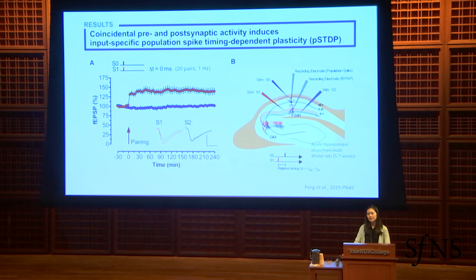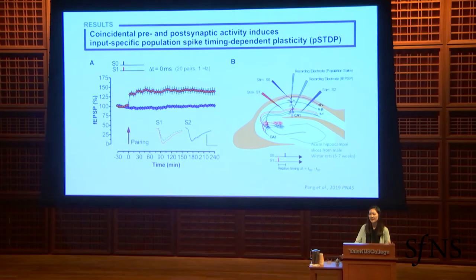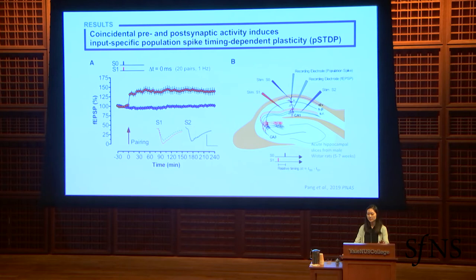I took slices from the rat hippocampus and recorded from the synapses between the CA3 and CA1 neurons. On each slice I had three stimulating electrodes. The first one, the purple one, was placed on the LVS layer, which contains a bundle of axons from the CA1 pyramidal neurons — this stimulates mainly post-synaptic activity. The red and blue electrodes stimulate the Schaffer collaterals, which are the pre-synaptic inputs onto the CA1 neurons. I induced plasticity with a pairing protocol: a stimulus to the purple electrode paired with a stimulus to the red electrode, repeated 20 times at one hertz.